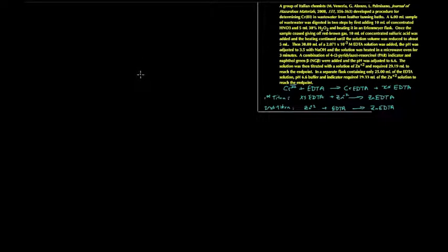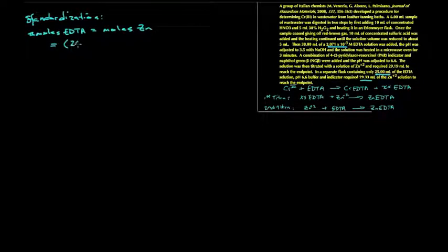So let's run the numbers. We need to start with the second titration, or the standardization titration, since we need to know the zinc concentration to do the back titration. So there's 29.33 milliliters of zinc titrated against 25 milliliters of EDTA, of which there's a concentration of 2 times 10 to the minus third. So for the standardization titration, we have moles of EDTA gives us the moles of zinc. So the moles of EDTA is 25 times 10 to the minus three liters, times a concentration of 2.071 times 10 to the minus three molar.